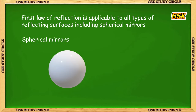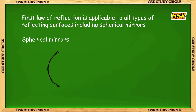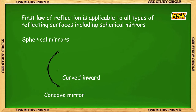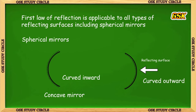Let us take a sphere and cut it in half. We get a curved surface. If the reflecting surface is curved inward, this is a concave mirror. If the reflecting surface is curved outward, this is a convex mirror.